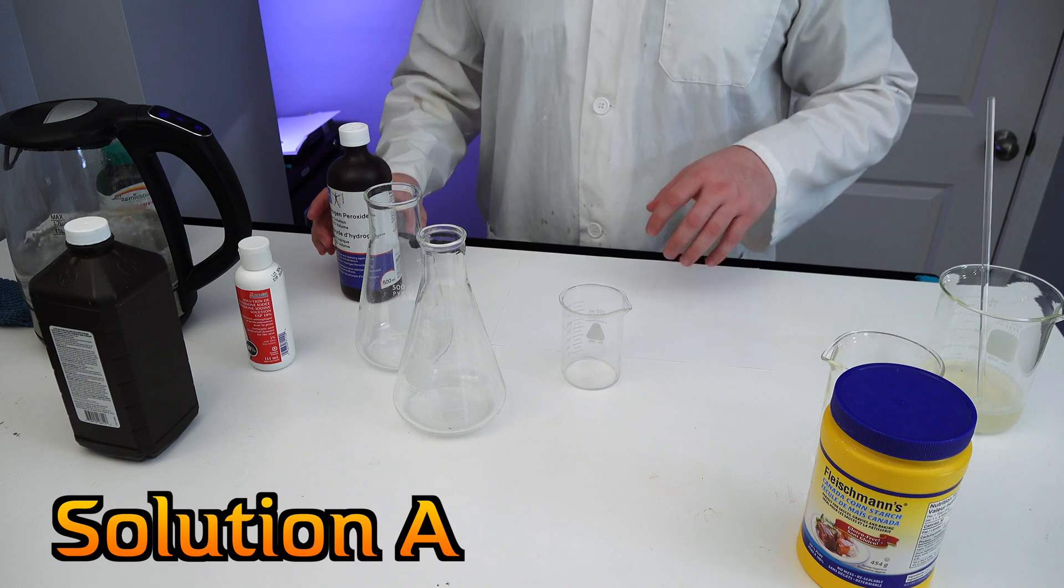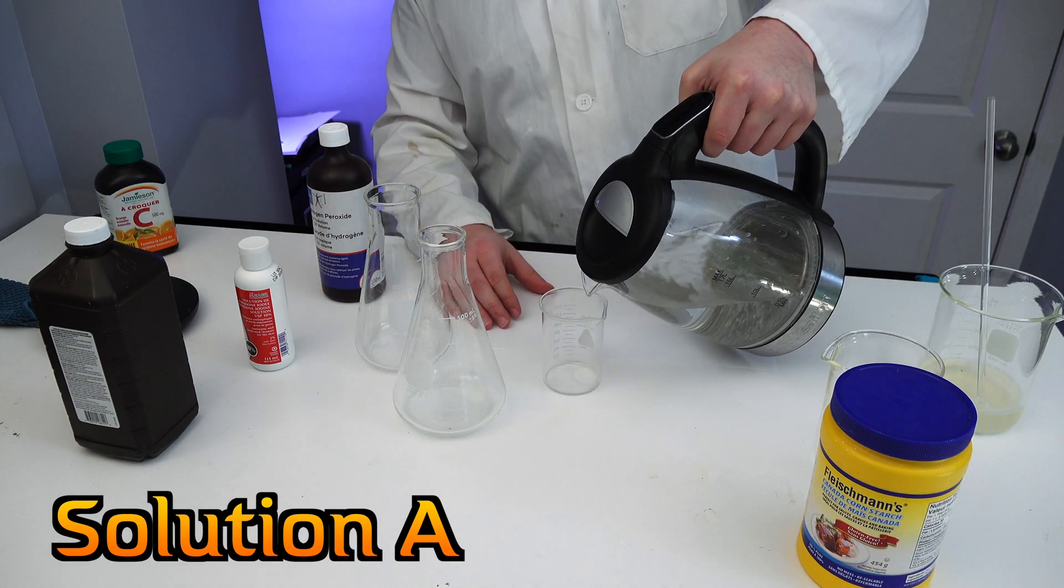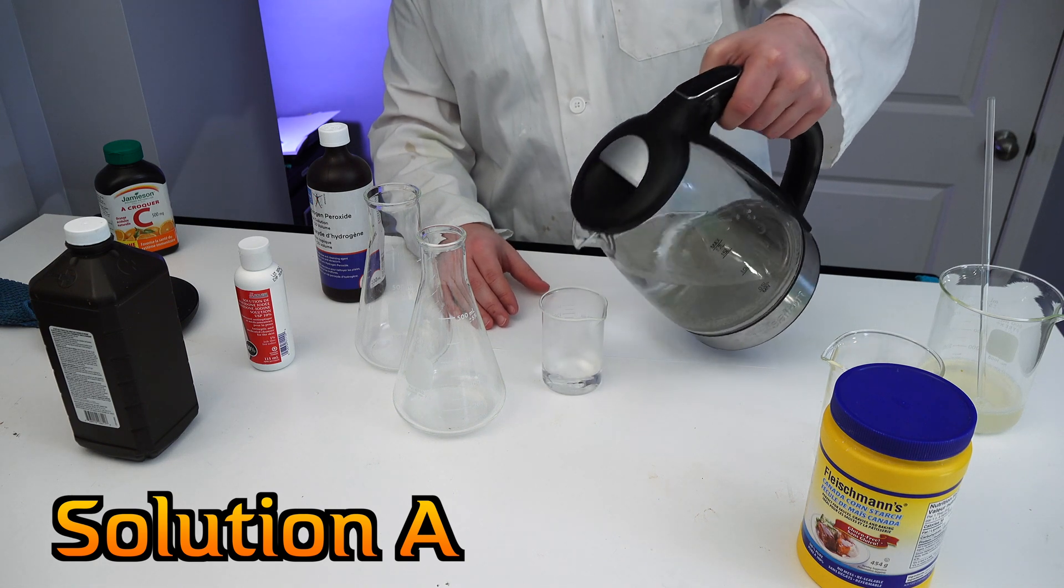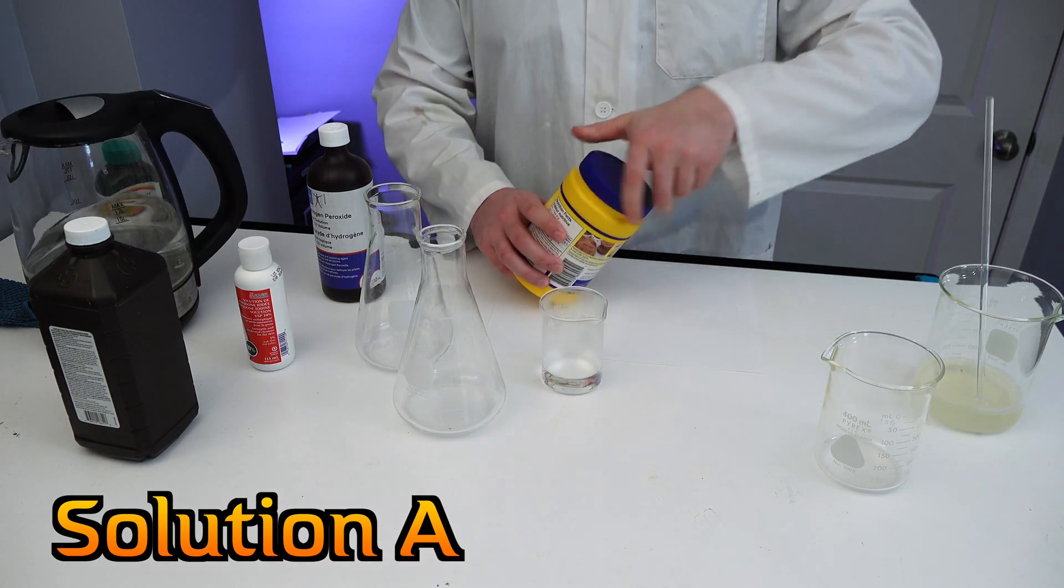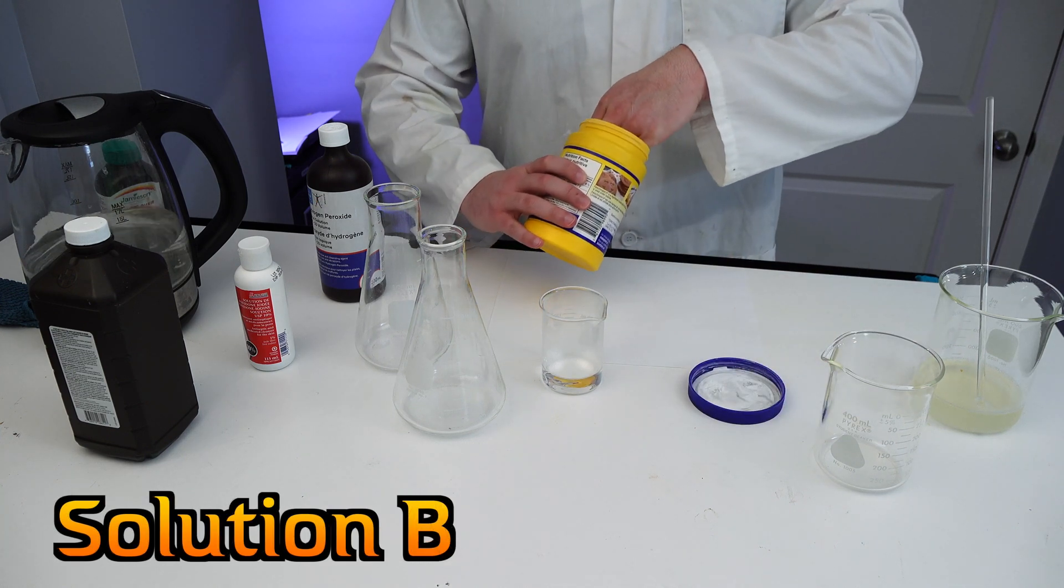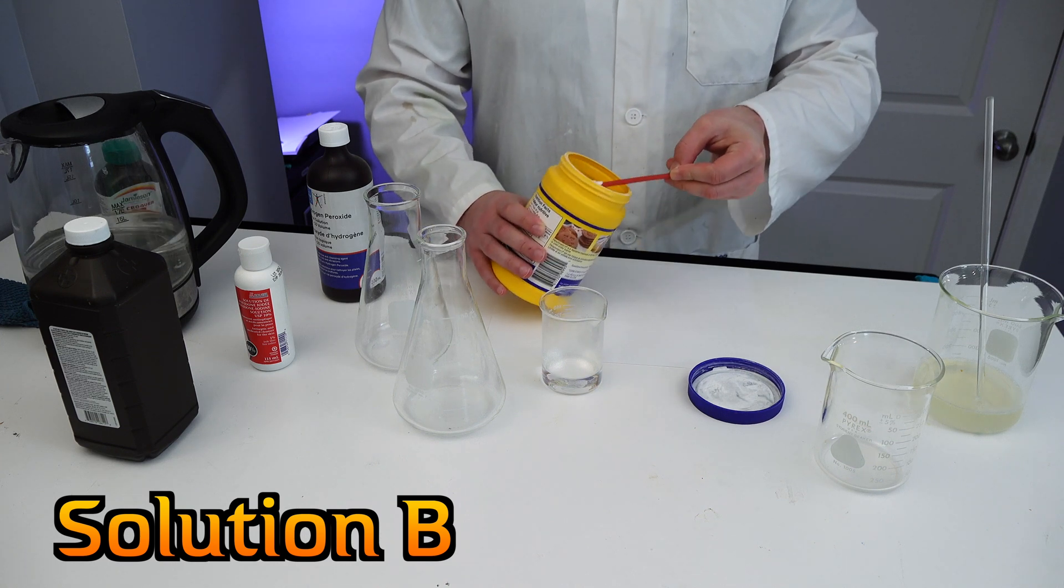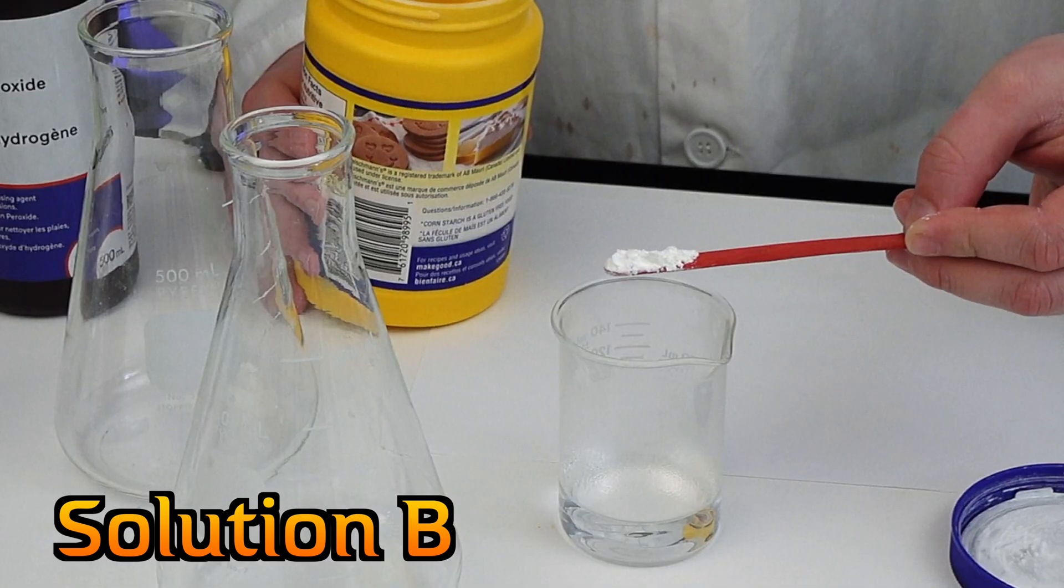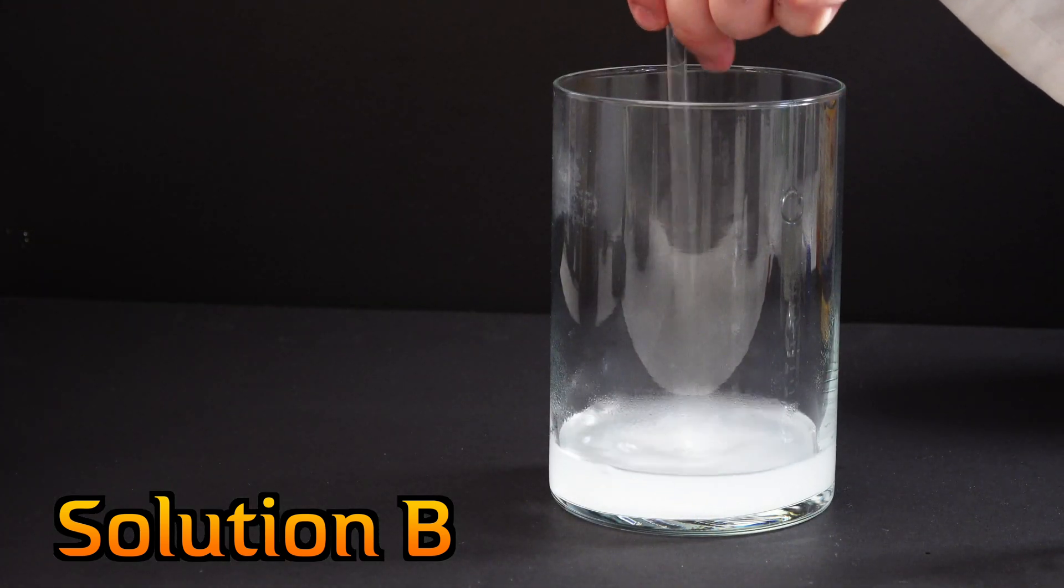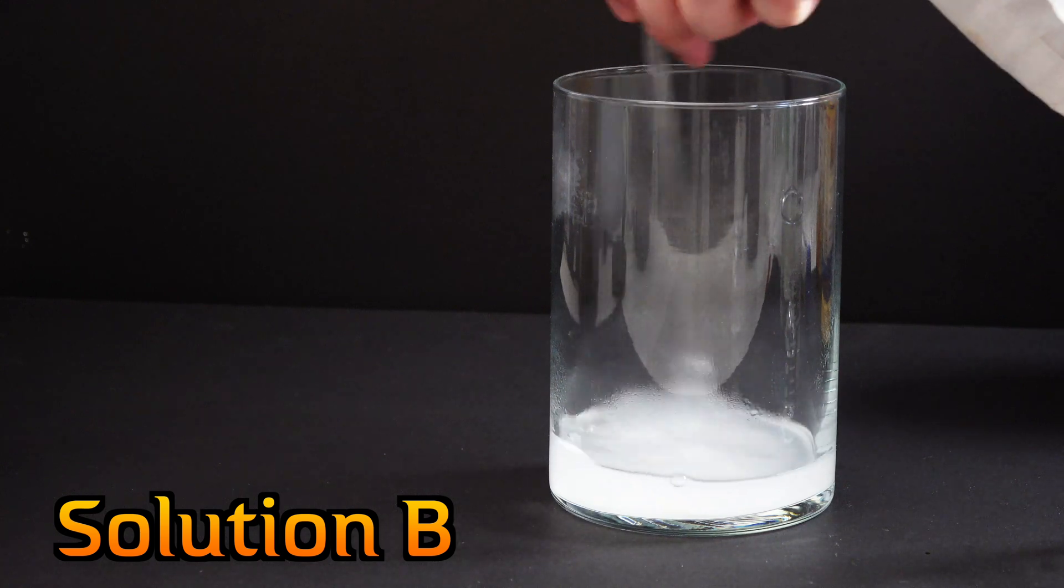Okay, so to make solution B, we're going to need 40 mils of boiling water. The only reason we're using boiling water is because cornstarch doesn't really dissolve all that well. And now to make this, we're going to need 200 milligrams of cornstarch. Now the scale we have isn't accurate enough to do that. So about that much is about 200 milligrams. Now cornstarch doesn't really dissolve all that well. So it's going to stay a little bit cloudy, but that's okay.